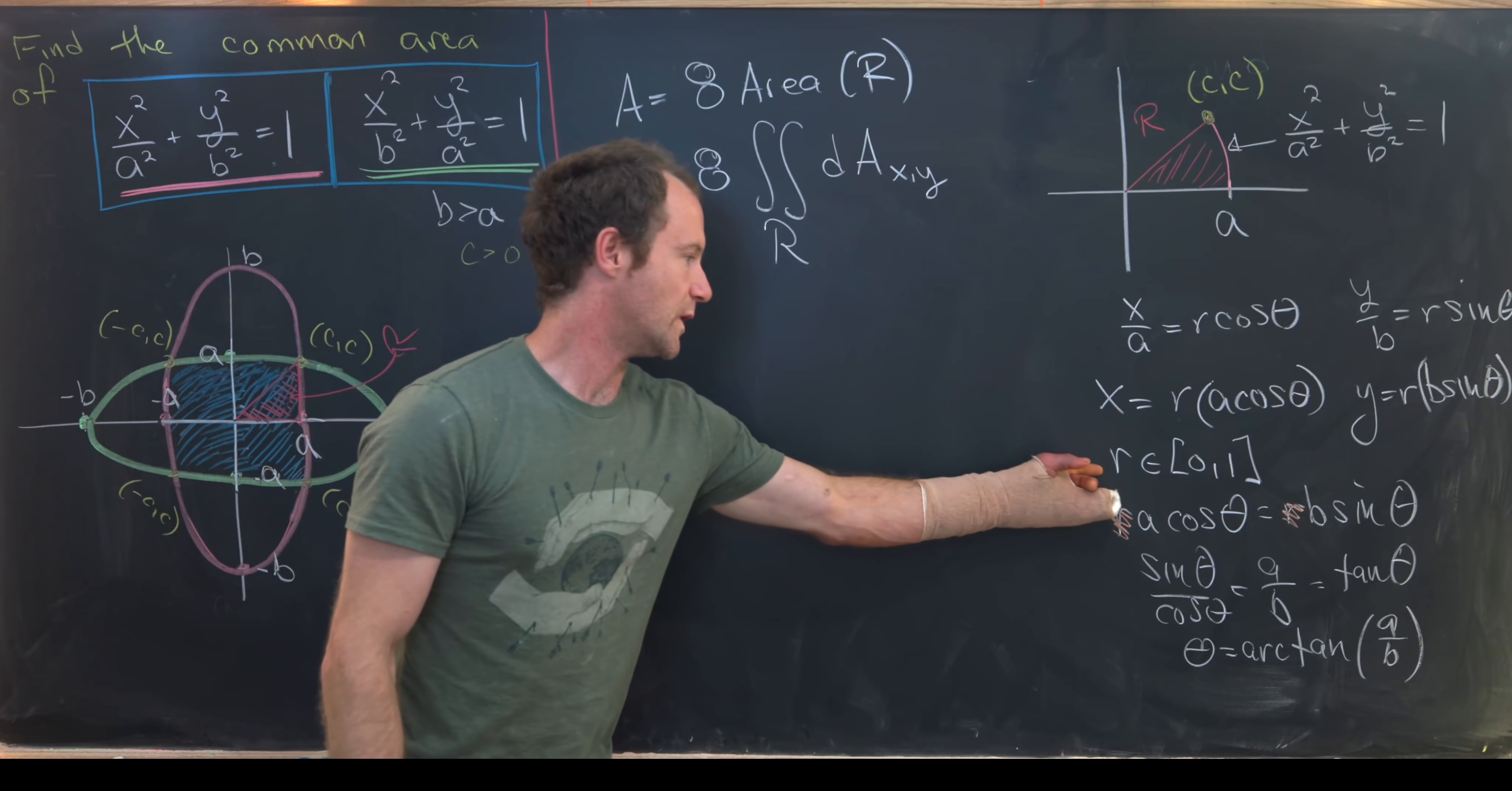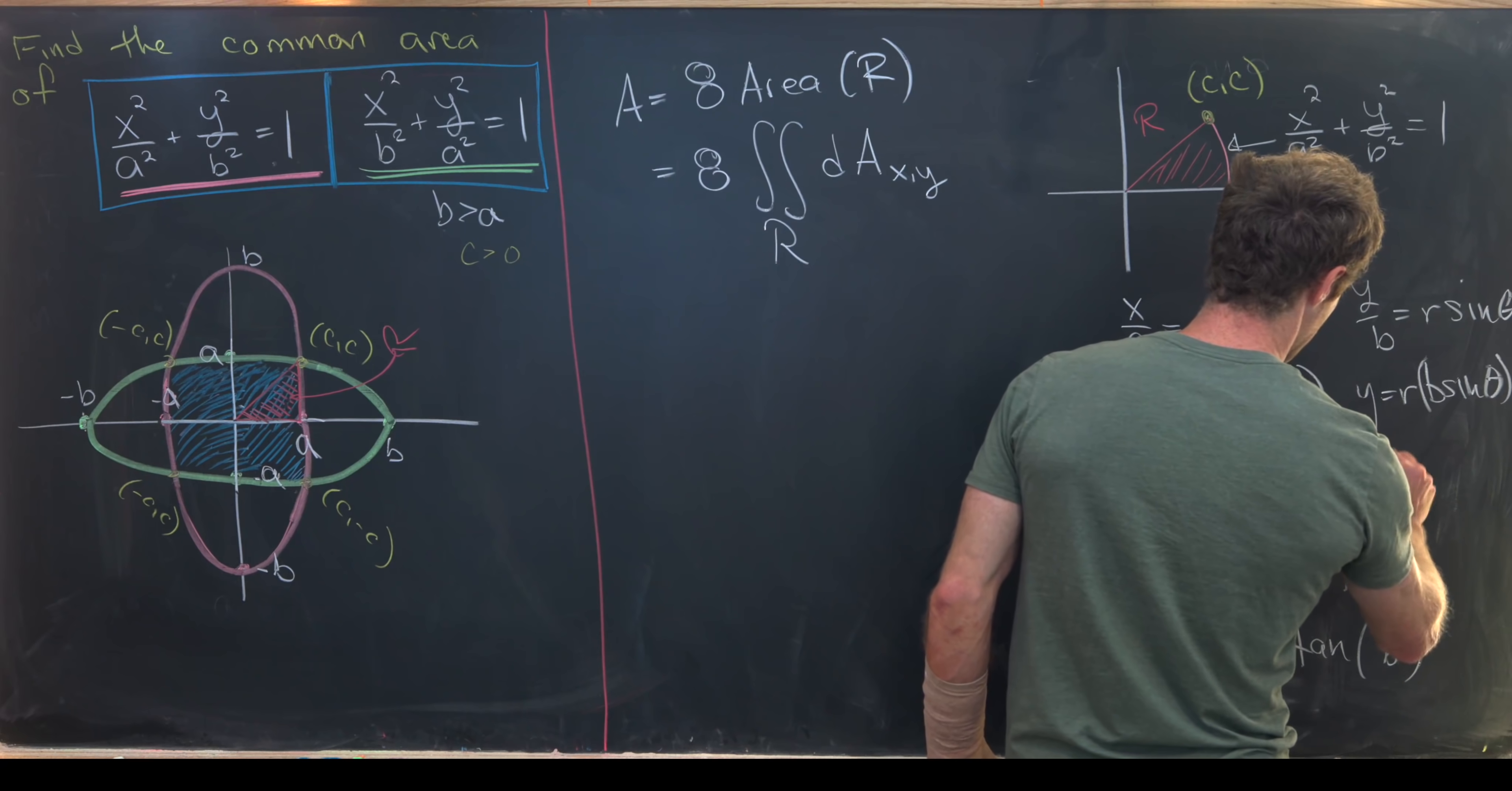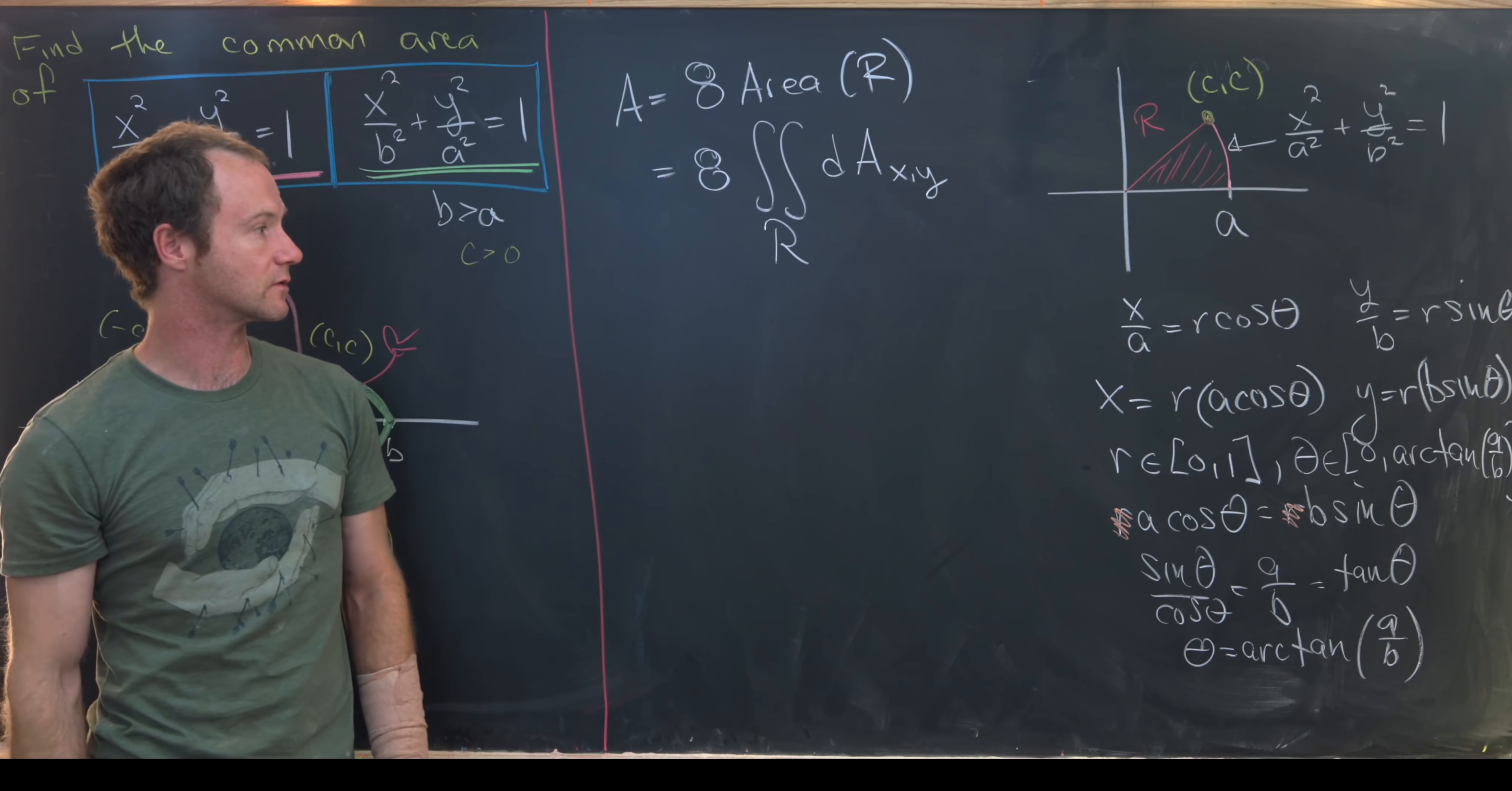So that means we know that r must go between 0 and 1, and then theta has to go between 0 and this arc tan of a over b which we just calculated. And that will draw this entire red region.